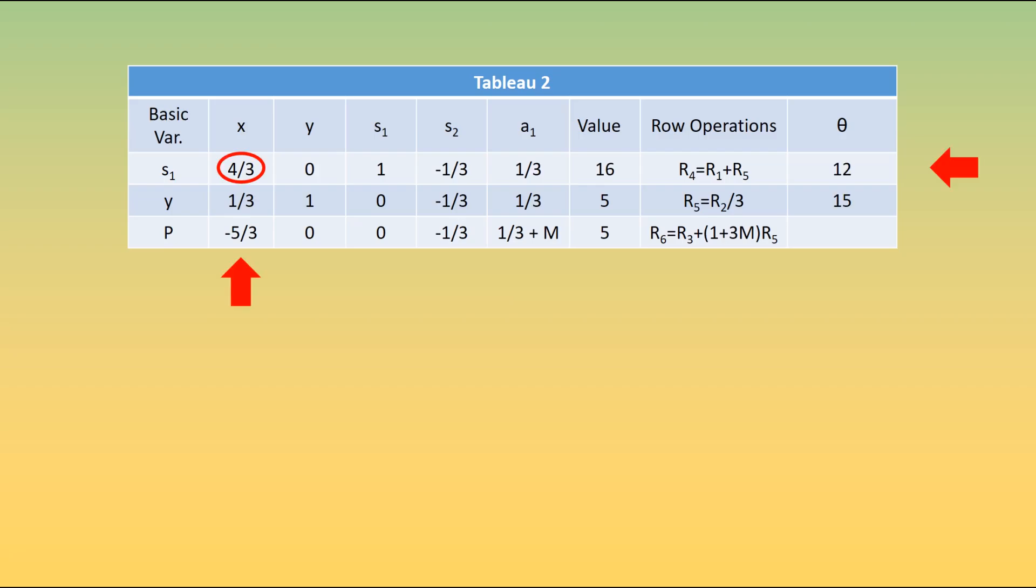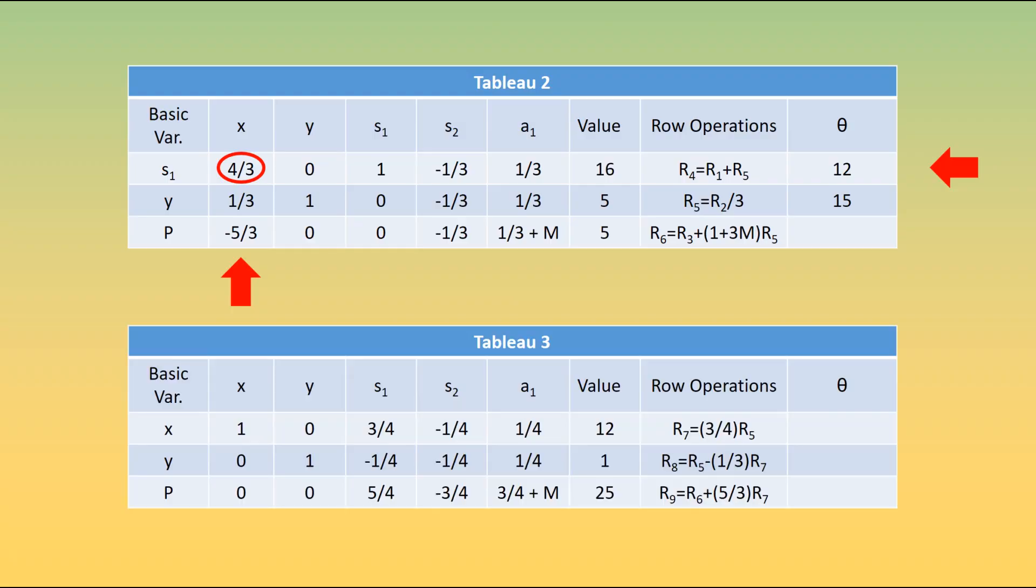In this case, it's minus 5 thirds is the largest. We've actually eliminated M from most of the other columns. And then we proceed as before, with each of our row operations shown there.